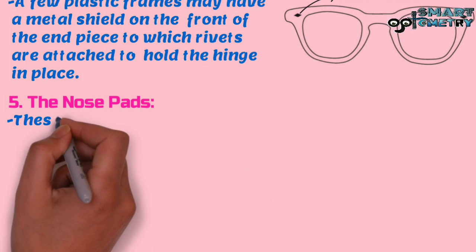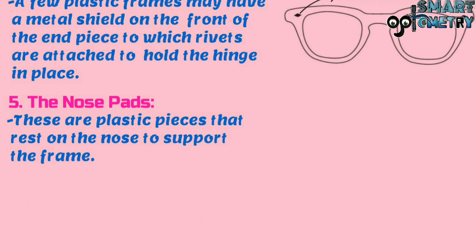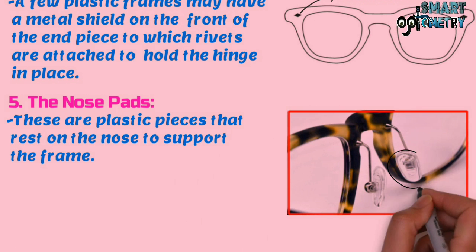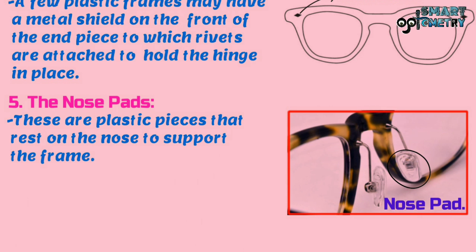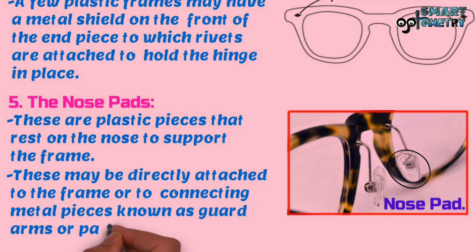Five, the nose pad. These are plastic pieces that rest on the nose to support the frame. Here in this figure you can see the nose pad. This may be directly attached to the frame or to the connecting metal pieces known as guard arms or pad arms.